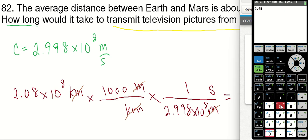2.08 times 10 to the 8 times 1,000 divided by 2.998 times 10 to the 8.